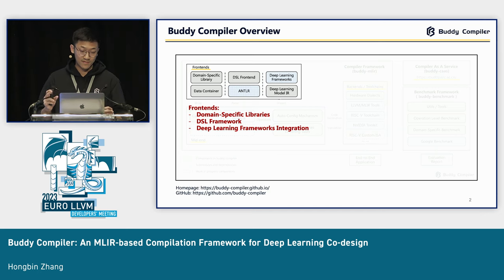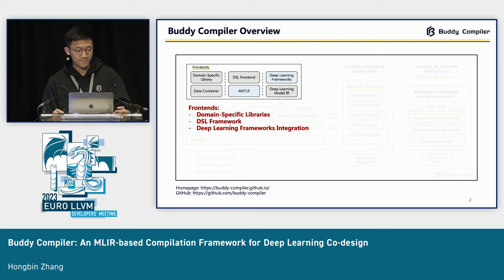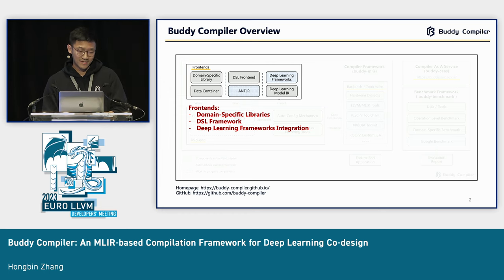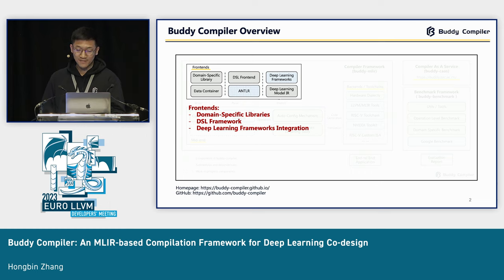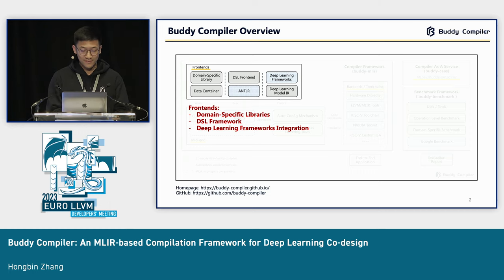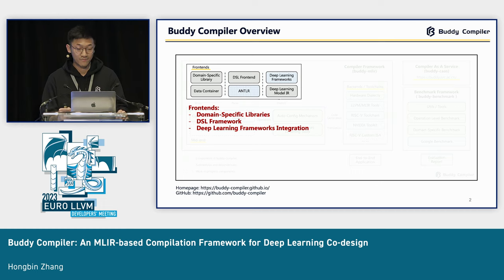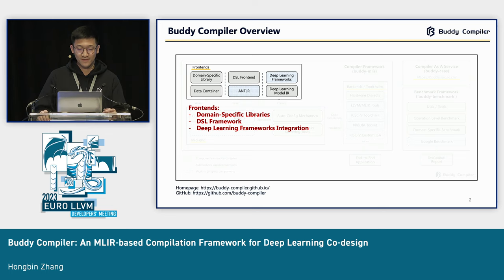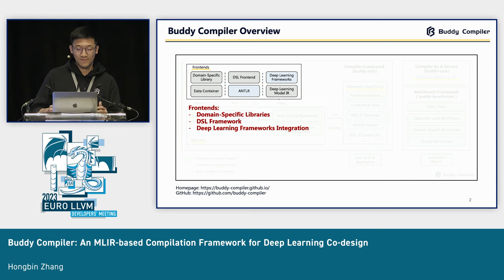For the front-end, we have three main parts. First, we use domain-specific language to program through our front-end — we wrap MLIR operations into a domain-specific language. The second part is the DSL framework: we use ANTLR to build our DSL front-end for MLIR, which saves a lot of effort in building custom domain-specific languages. The third part is deep learning framework integration, where we reuse work from TensorFlow, PyTorch, and OpenXLA to get deep learning module IR.